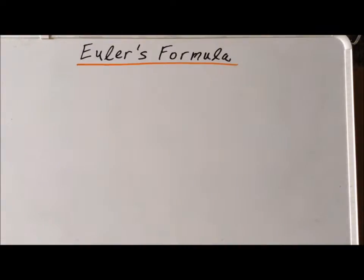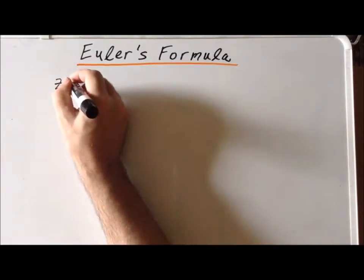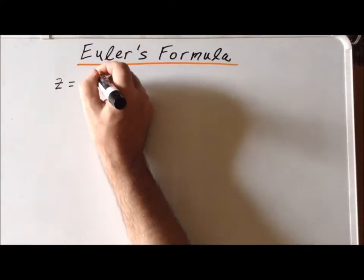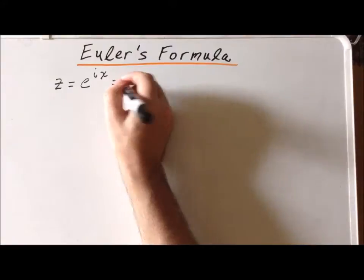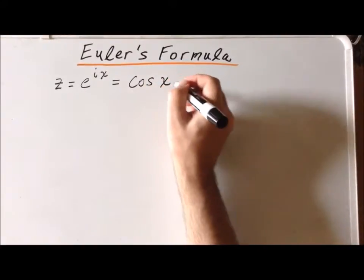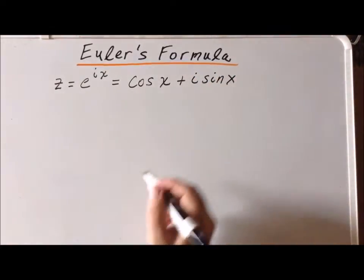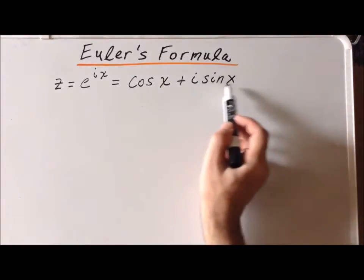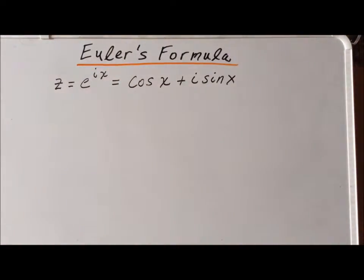Hello. In this video, we are going to derive some important relationships using Euler's formula. Recall that if we have a complex number z in the form e to the i x, that using Euler's formula, we can write it as cosine of x plus i times the sine of x. We notice that the argument of the cosine or the sine function is just the number x that's multiplied by the imaginary number in the exponent.